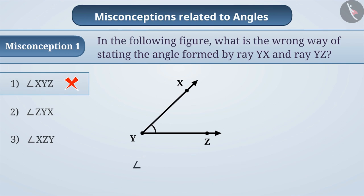Some children do not know that angle XYZ can also be written as angle ZYX. They think that it is incorrect to write the name of the angle as angle ZYX in this way. So they give the wrong answer as option 2.